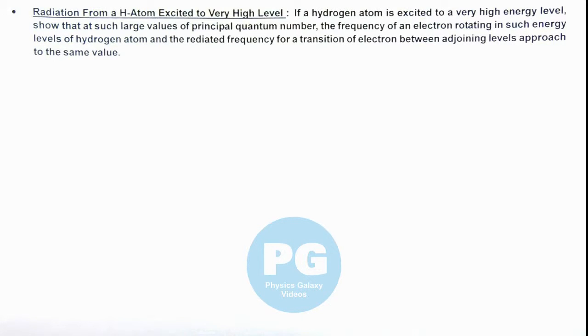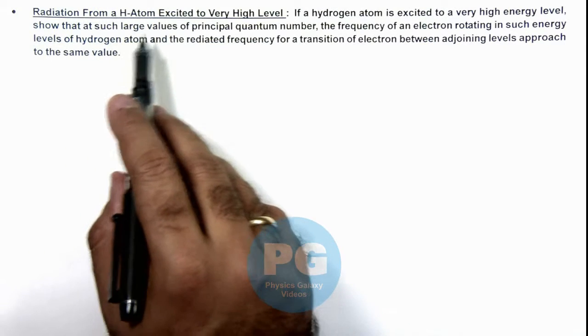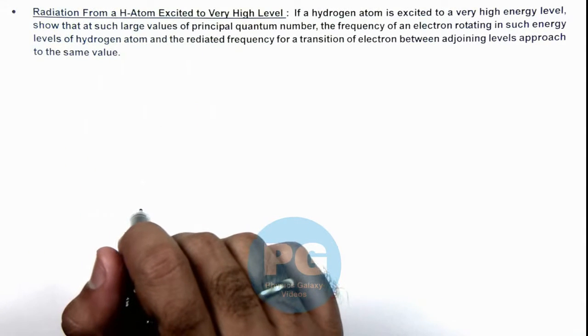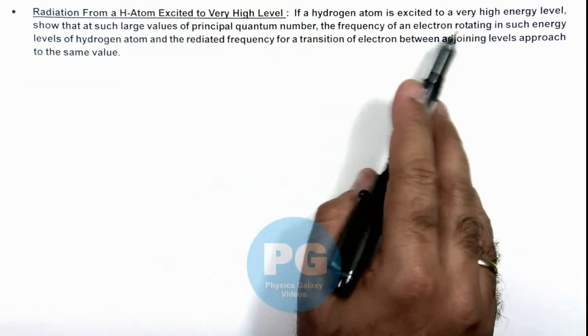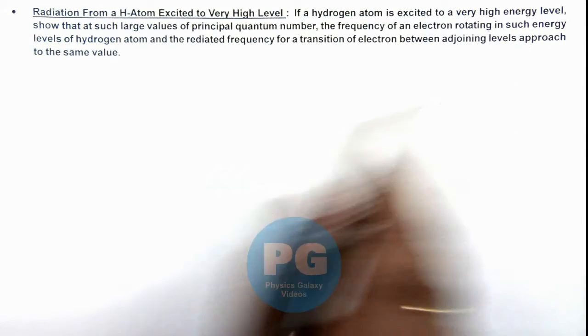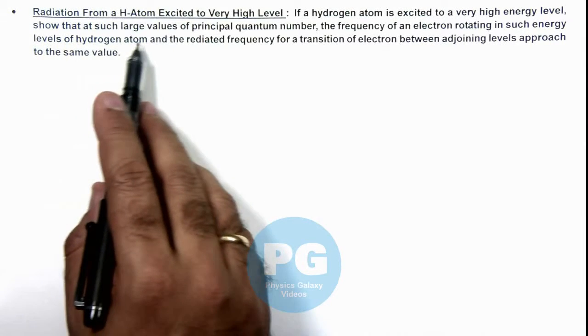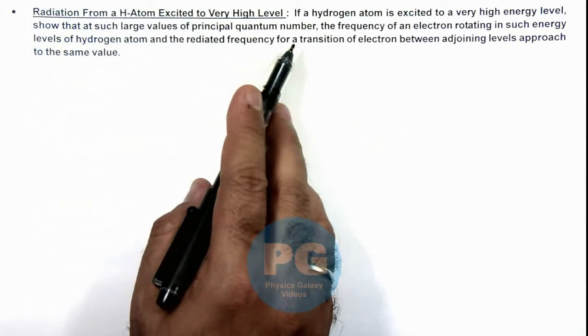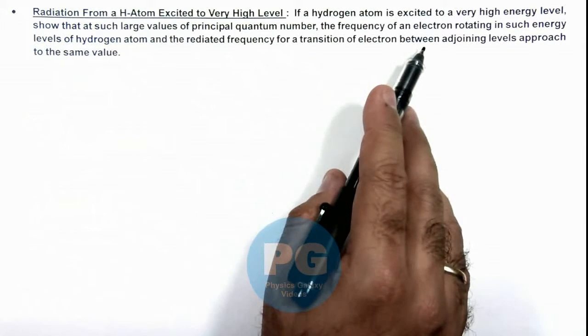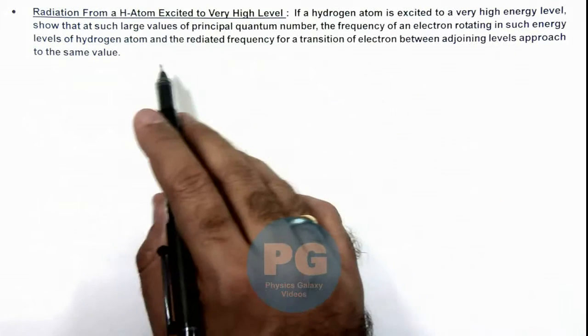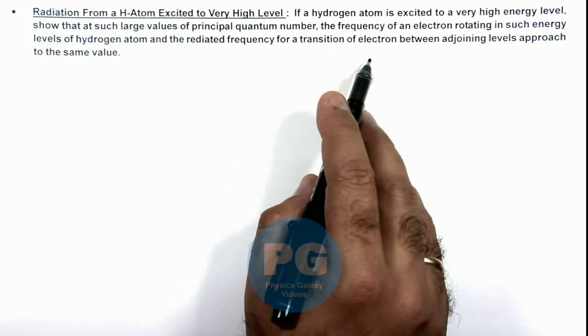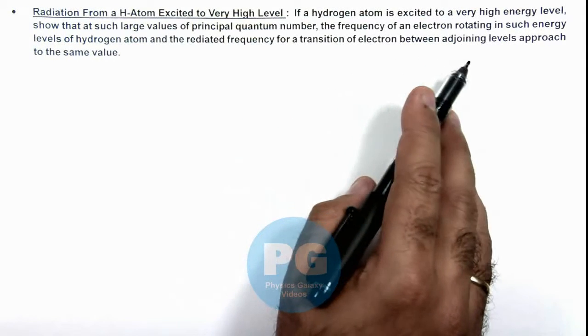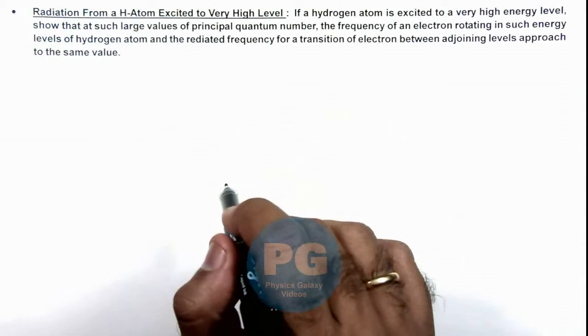In this illustration we'll discuss radiation from a hydrogen atom excited to a very high level. Here we are given if a hydrogen atom is excited to a very high energy level, show that at such large values of principal quantum number, the frequency of an electron rotating in such energy levels of hydrogen atom and the radiated frequency for a transition of electron between adjoining energy levels approach to the same value.